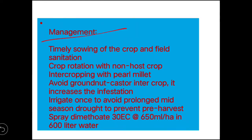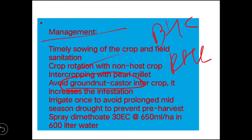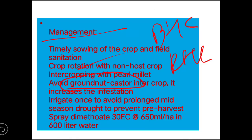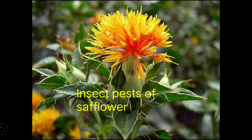For management of jassid, sow the crop in time, maintain field sanitation, rotate with non-host crops, and avoid groundnut–castor intercrop if jassid population is high (even though that intercrop helps against hairy caterpillars). You can spray dimethoate for chemical control.